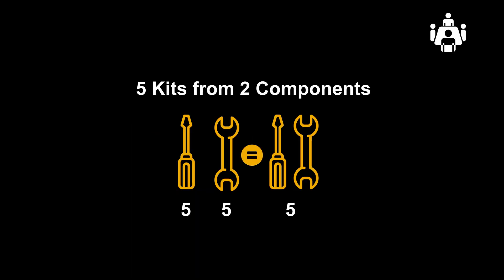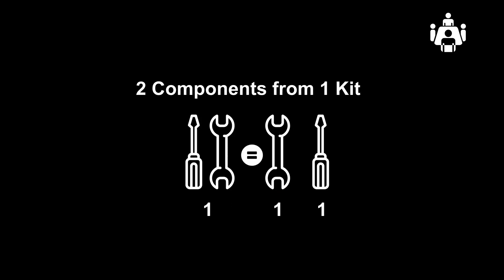In this video, we will look at two examples. First, the creation of five kits, each built with two components. Then, a reverse kitting of one kit, dismantling it and storing the components.